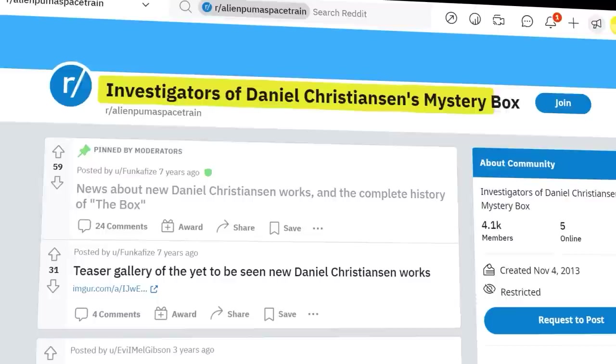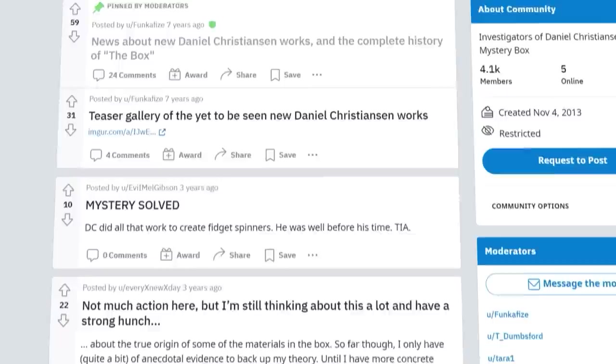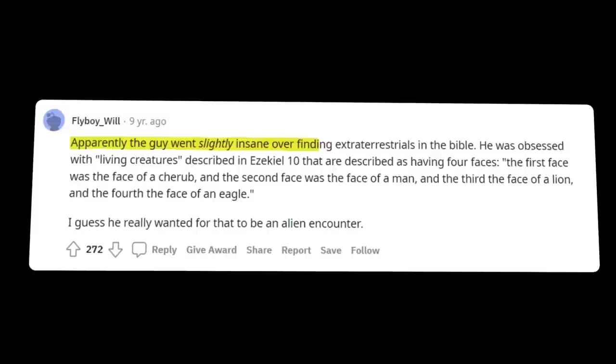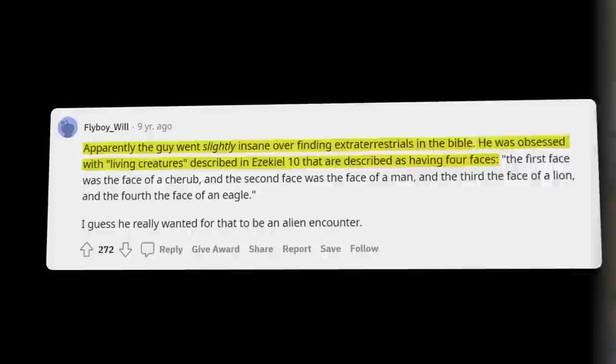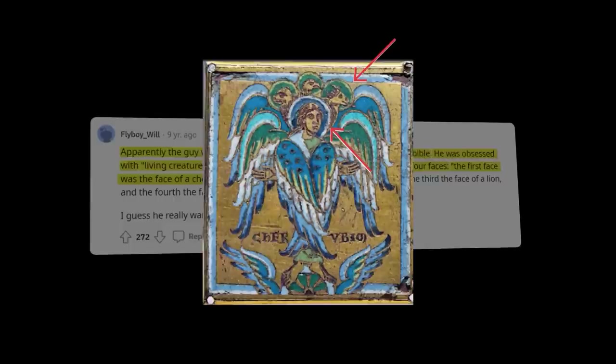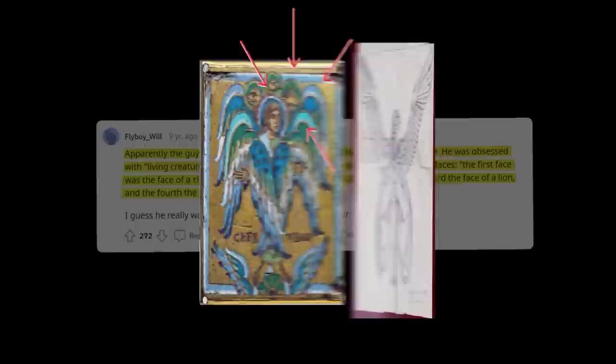A subreddit dedicated to understanding the Box of Crazy has been established under the name Investigators of Daniel Christensen's Mystery Box, and various theories have been put forward to try and explain what some of the notes and drawings mean. The most persistent theory to date is that the Box's original owner went a bit crazy over the Book of Ezekiel, as the quote-unquote aliens in the Crazy Box's drawing resembles creatures mentioned in the Book of the Bible. User Flyboy underscore Will explains, apparently the guy went slightly insane over finding extraterrestrials in the Bible. He was obsessed with living creatures that are described as having four faces. The first face was the face of a cherub, the second, the face of a man, the third, the face of a lion, and the fourth, the face of an eagle, which matched up with the drawings in the box pretty well.